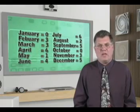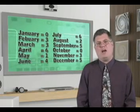We then need to know the significant value of the months. The values are January equals zero, February equals three, March equals three, April equals six, May equals one, June equals four, July equals six, August equals two, September equals five, October equals zero, November equals three, and December equals five.